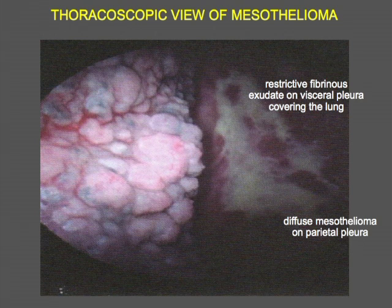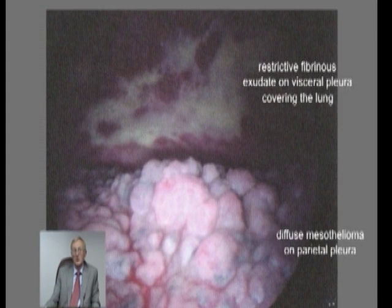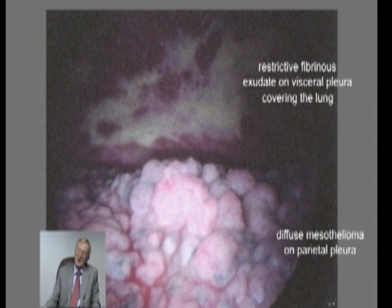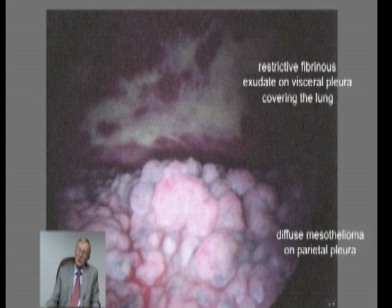So when we come on to talk about other forms of surgery, we'll be talking about an operation called pleurectomy decortication. That is an operation which removes the parietal pleura, but also decorticates or removes the surface covering of the lung, which may be either tumor or a mixture of tumor and this fibrinous exudate.